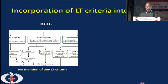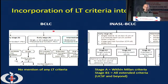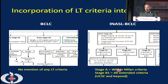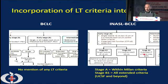In the INASL modification of BCLC, we have clearly addressed the staging. In the standard BCLC system, there is no explicit mention of liver transplant criteria — they mention single tumor less than 3 cm or multiple tumors less than 3 cm, essentially Milan criteria, but do not state it explicitly and do not mention other expanded criteria. In INASL BCLC staging, stage A are patients who are fit and within the Milan criteria. Patients fitting extended criteria such as UCSF or Kyoto criteria are graded as INASL BCLC stage B1.